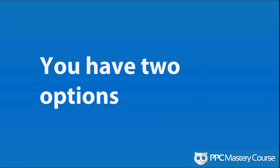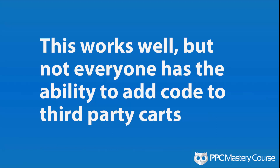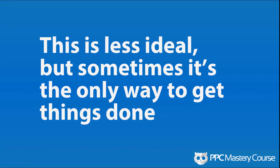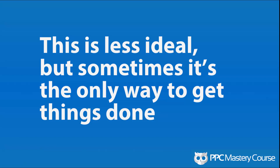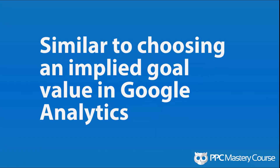When you don't have control of the page, you usually have two options. The first and best option is to get some kind of access to the third-party thank-you page or shopping cart and add your conversion pixel there. That's the ideal scenario. But not everybody has access to add code to third-party carts, so there's a second, less-than-ideal option: fire your conversion code on click — when somebody clicks the 'Add to Cart' button, you fire your conversion code and track it that way.